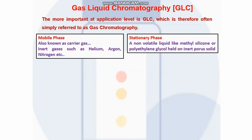At the application level, GLC is more important and is therefore commonly referred to simply as gas chromatography. In GLC, the mobile phase is a gas, also known as the carrier gas.